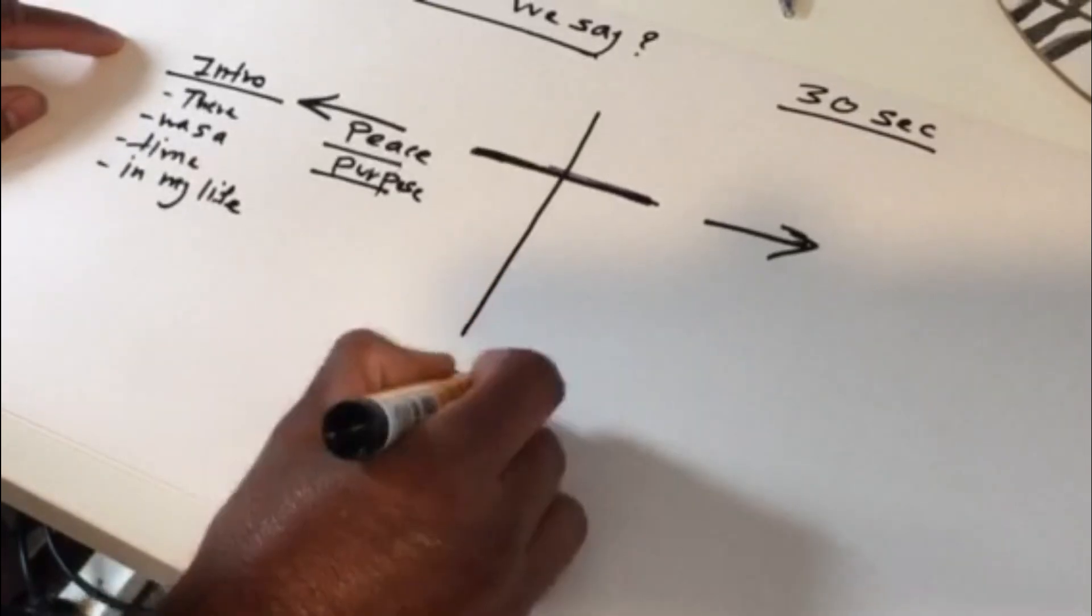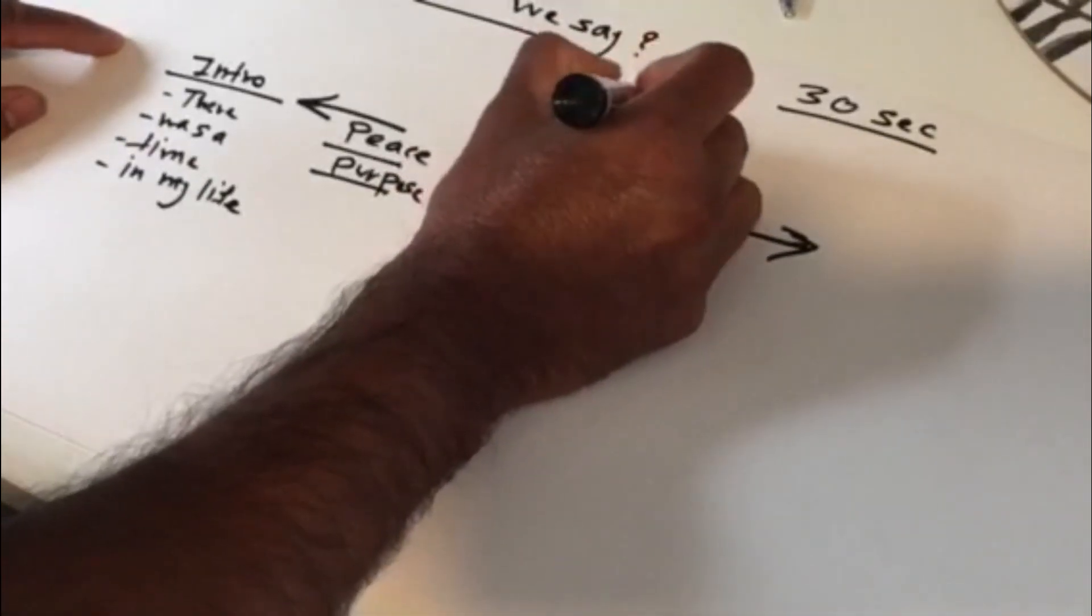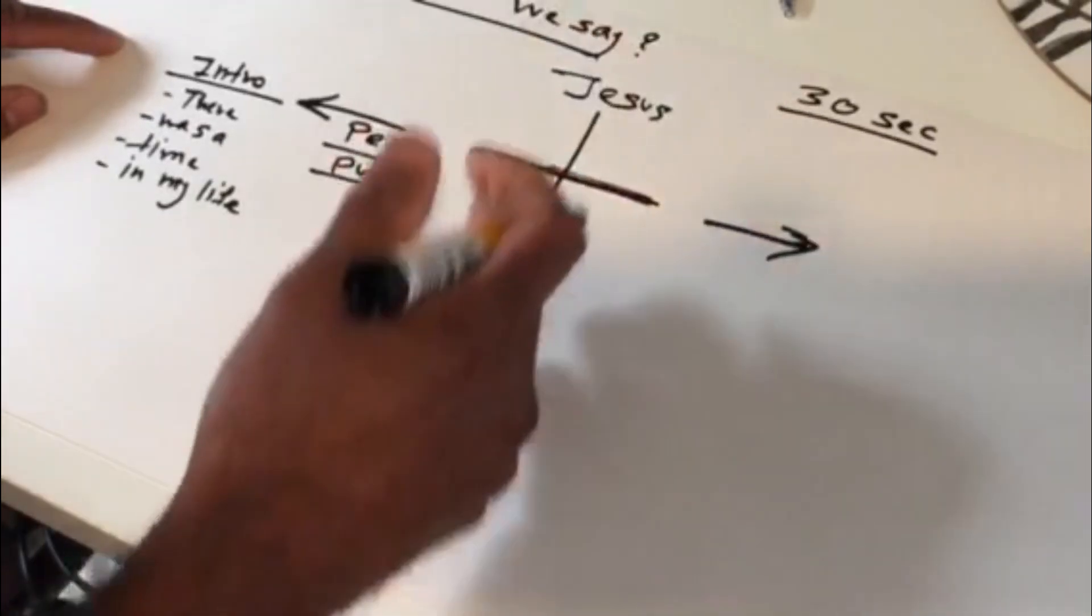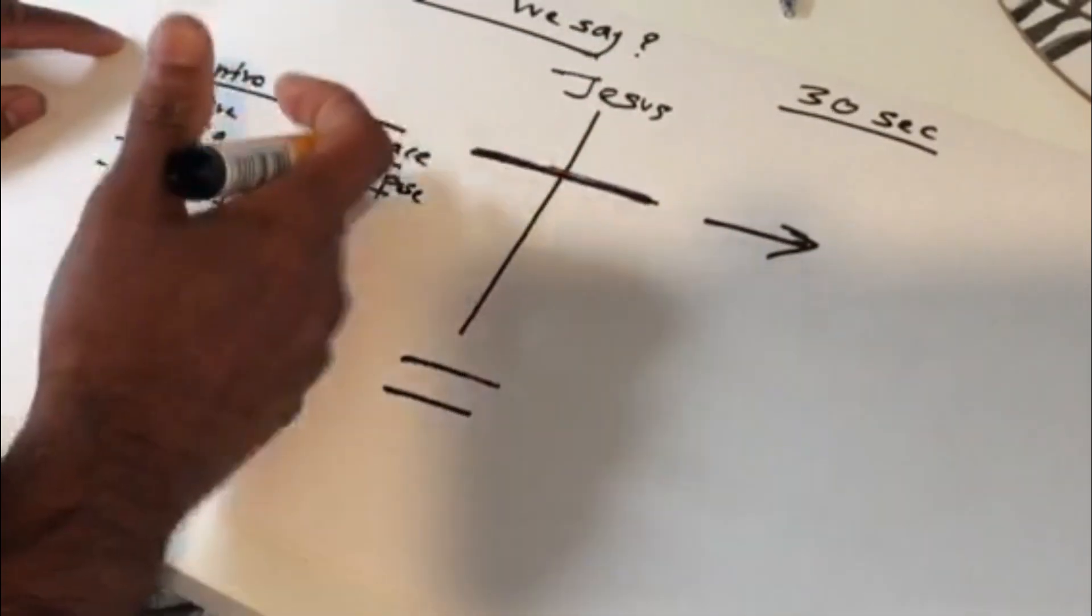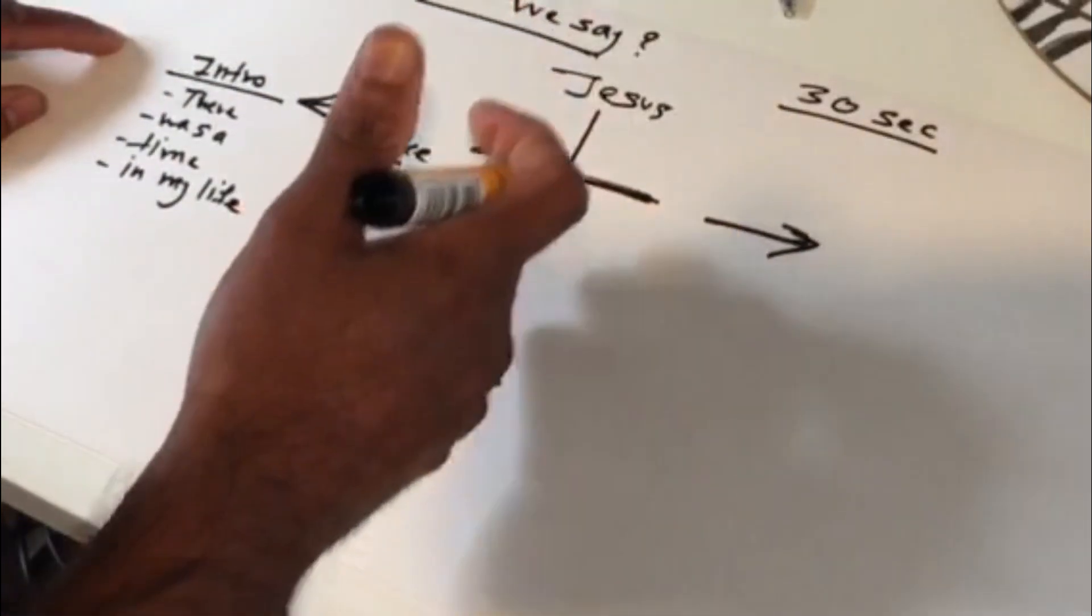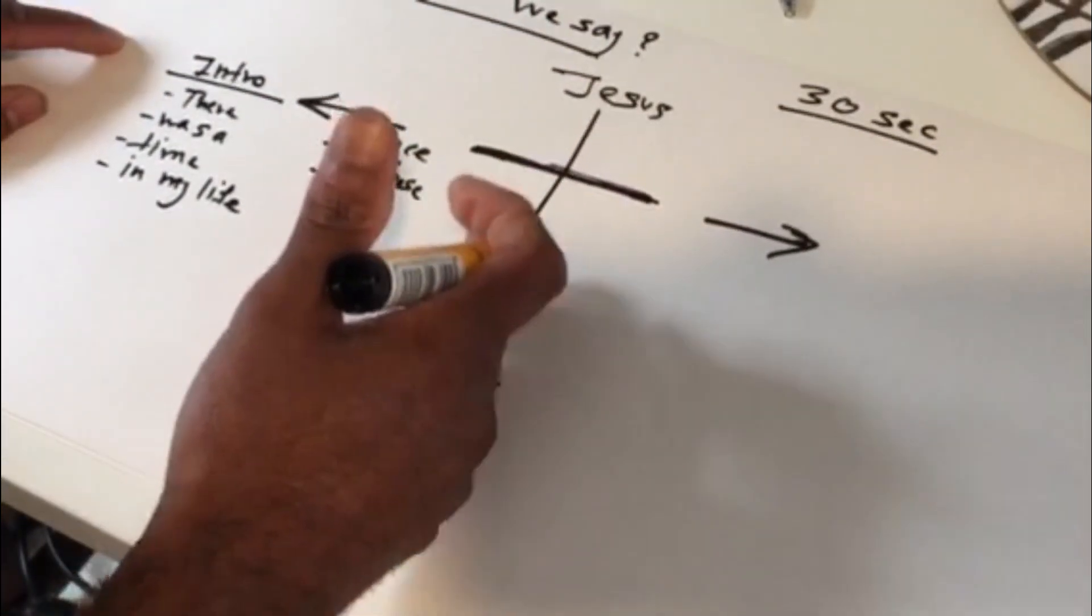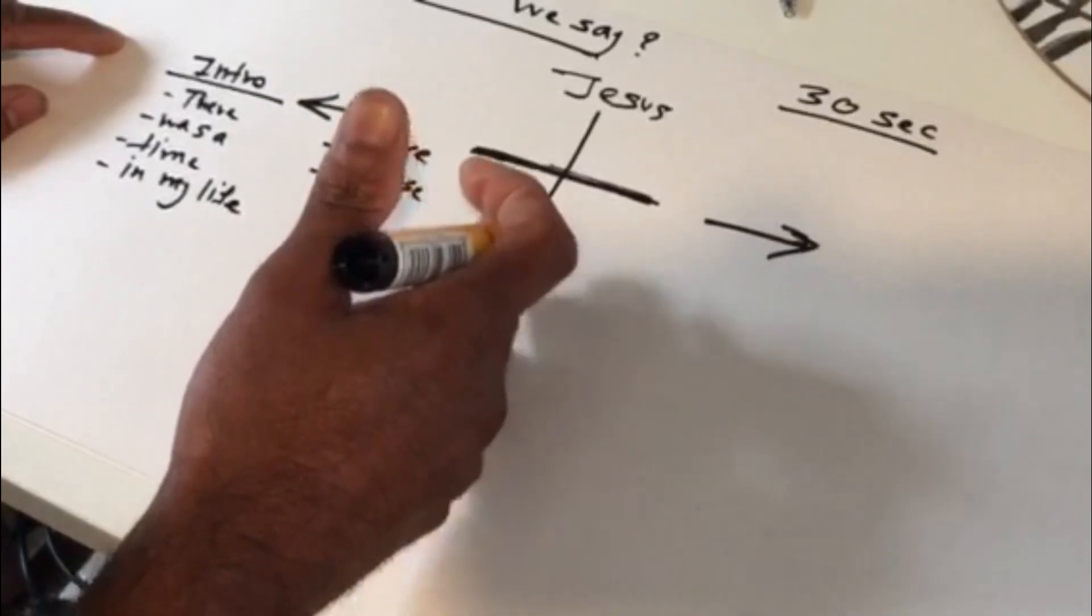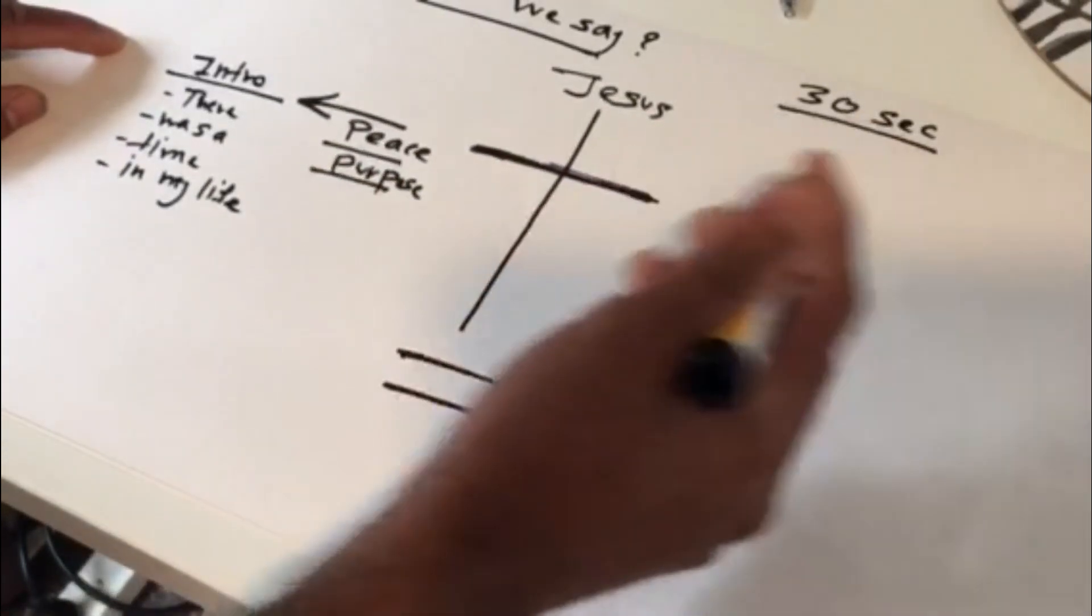And then right in the middle where the cross is, that's where all of us had the encounter. I put Jesus here. So my life before Christ, there was a time in my life, I had no peace, no purpose. My life when I met with Jesus, what happened? And then after I met with Jesus.